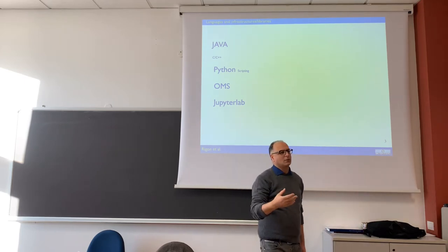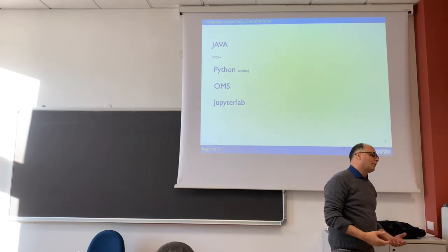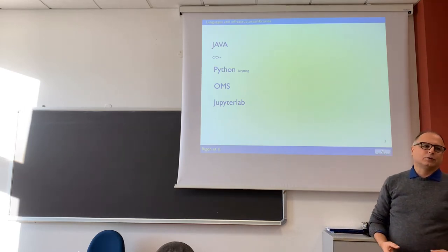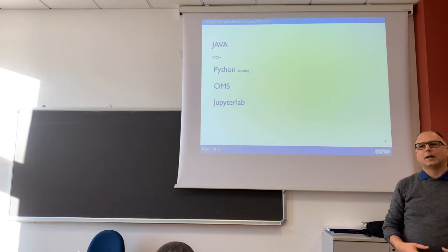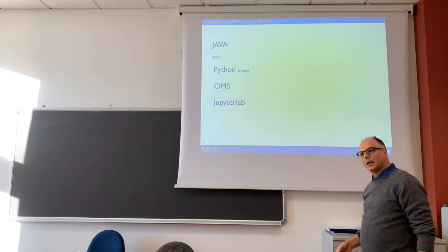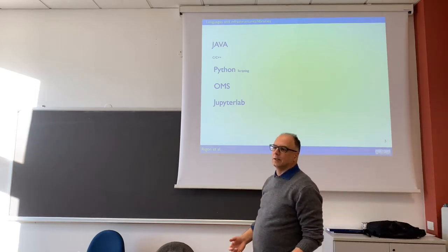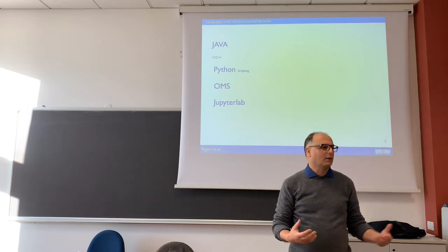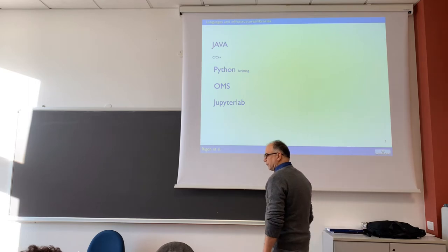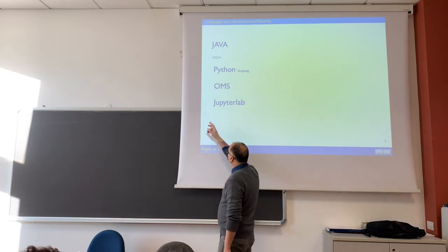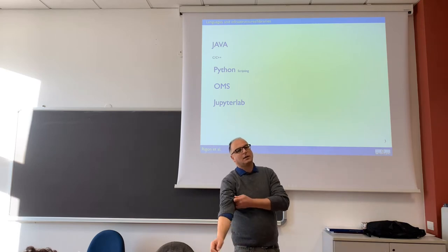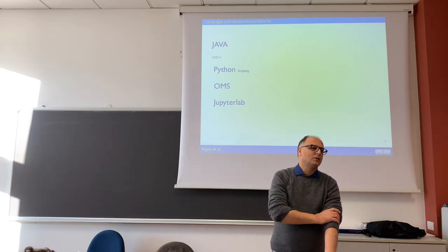It was built on Java because on Java there were available some programming features like reflection, that are also present in other programming languages — but not, for instance, in the original Fortran when this was first made. We use Python scripting for running and analyzing, especially the time series.